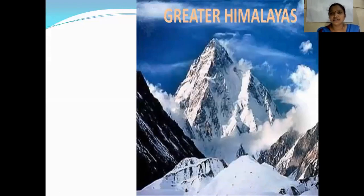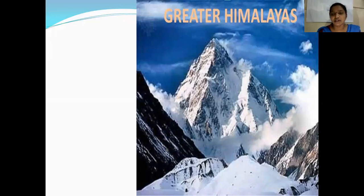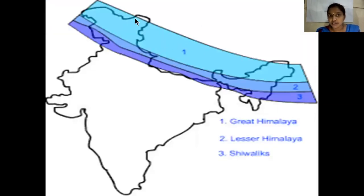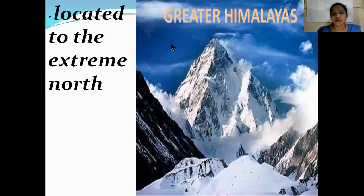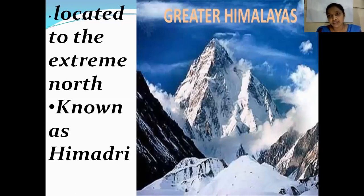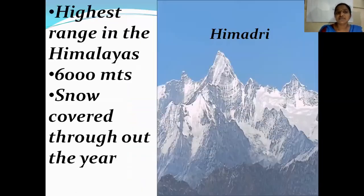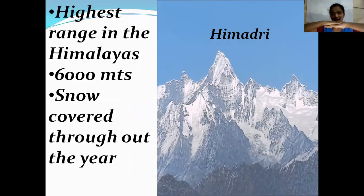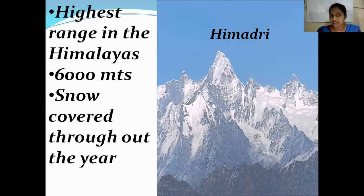The greater Himalayas, also known as Himadri, are located to the extreme north. The mountain height ranges from 6,000 meters above sea level. The Himadri range is the highest range in the Himalayas, and it is covered with snow throughout the year — whether in summer, winter, or the rainy season.